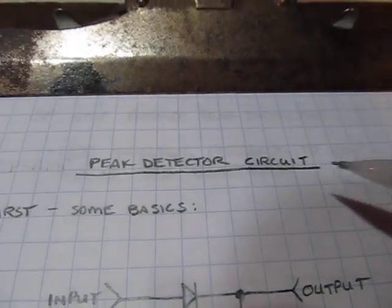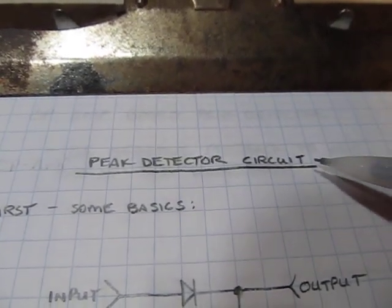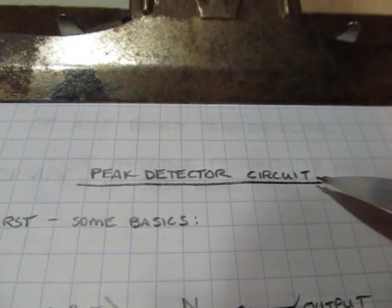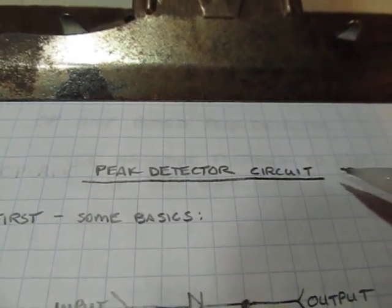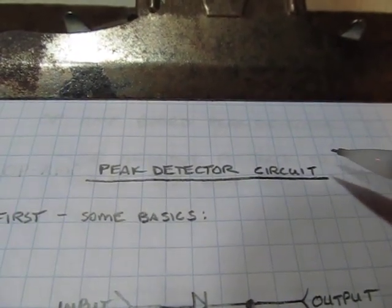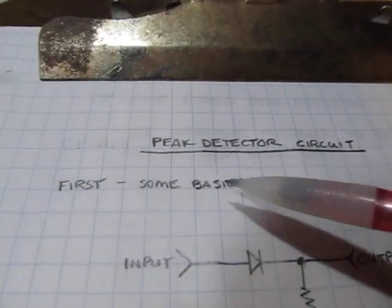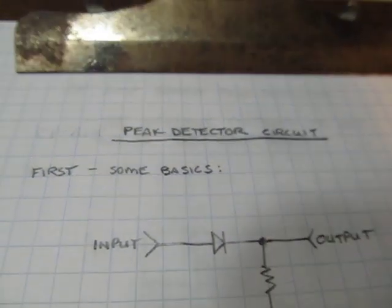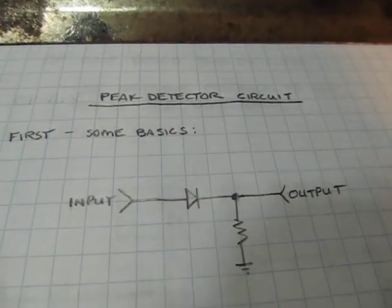In this video, we're going to take a look at peak detector circuits, really useful little circuits for measuring the level of a signal that might exist in your circuit. We'll take a quick look at a couple of basics first, and then work our way into an op-amp-based peak detector.